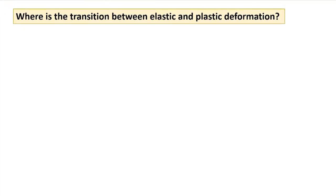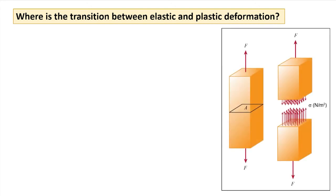So where is the point between elastic and plastic deformation? How do we know how much force we can apply before permanently deforming a material? Let's look at an easy case. Imagine you are pulling straight on a bar with a force F, as shown in the figure, and the bar has a cross-sectional area A. We define a quantity called stress, which is equal to the force divided by the area.